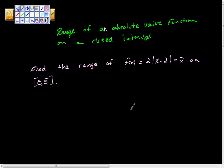Here's a multiple choice question out of the AP Calculus AB workbook. We're going to find the range of an absolute value function on a closed interval. Here we're asked to find the range of f(x) equals 2 times the absolute value of x minus 2, quantity minus 2, on the interval 0 to 5.